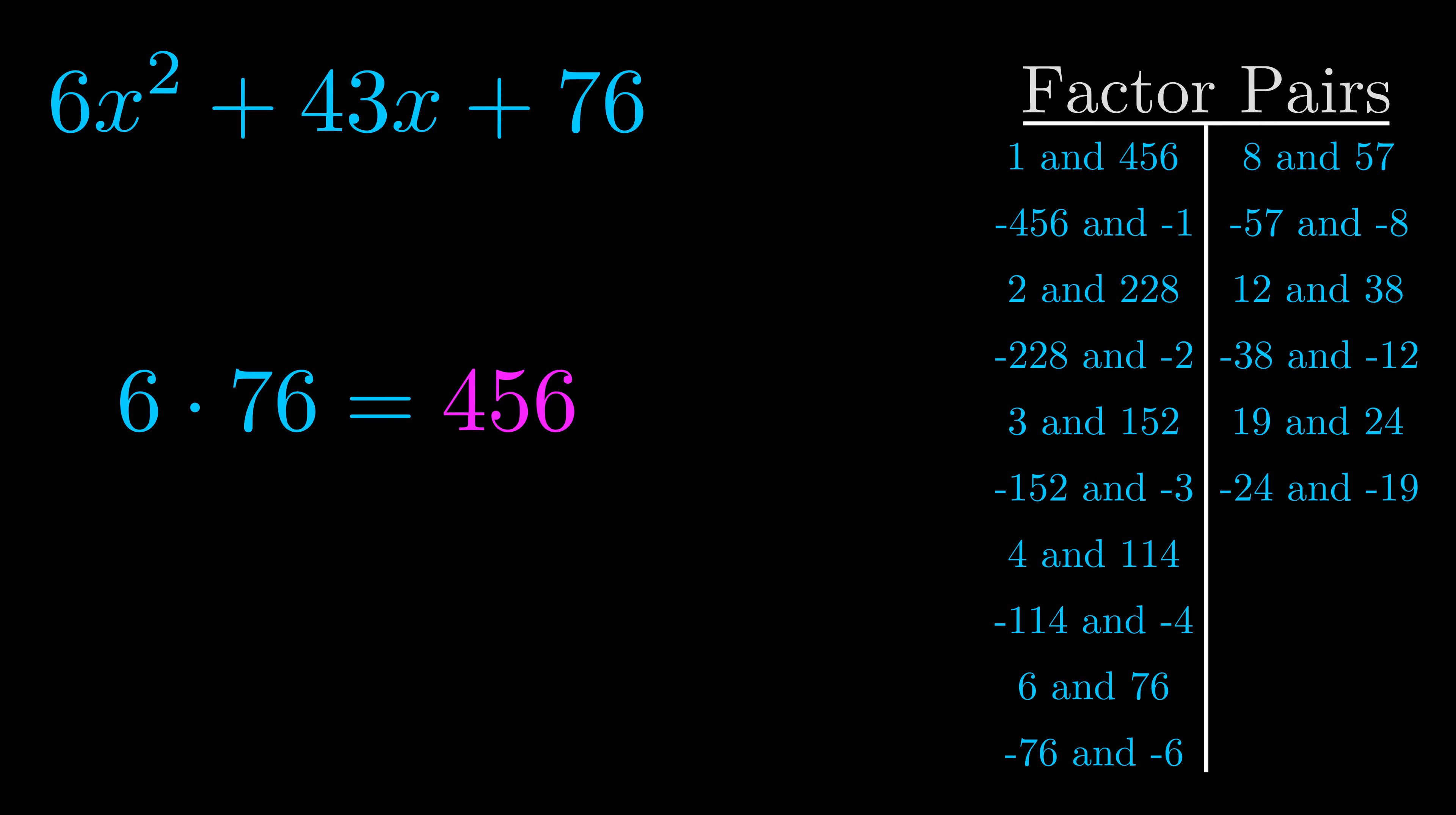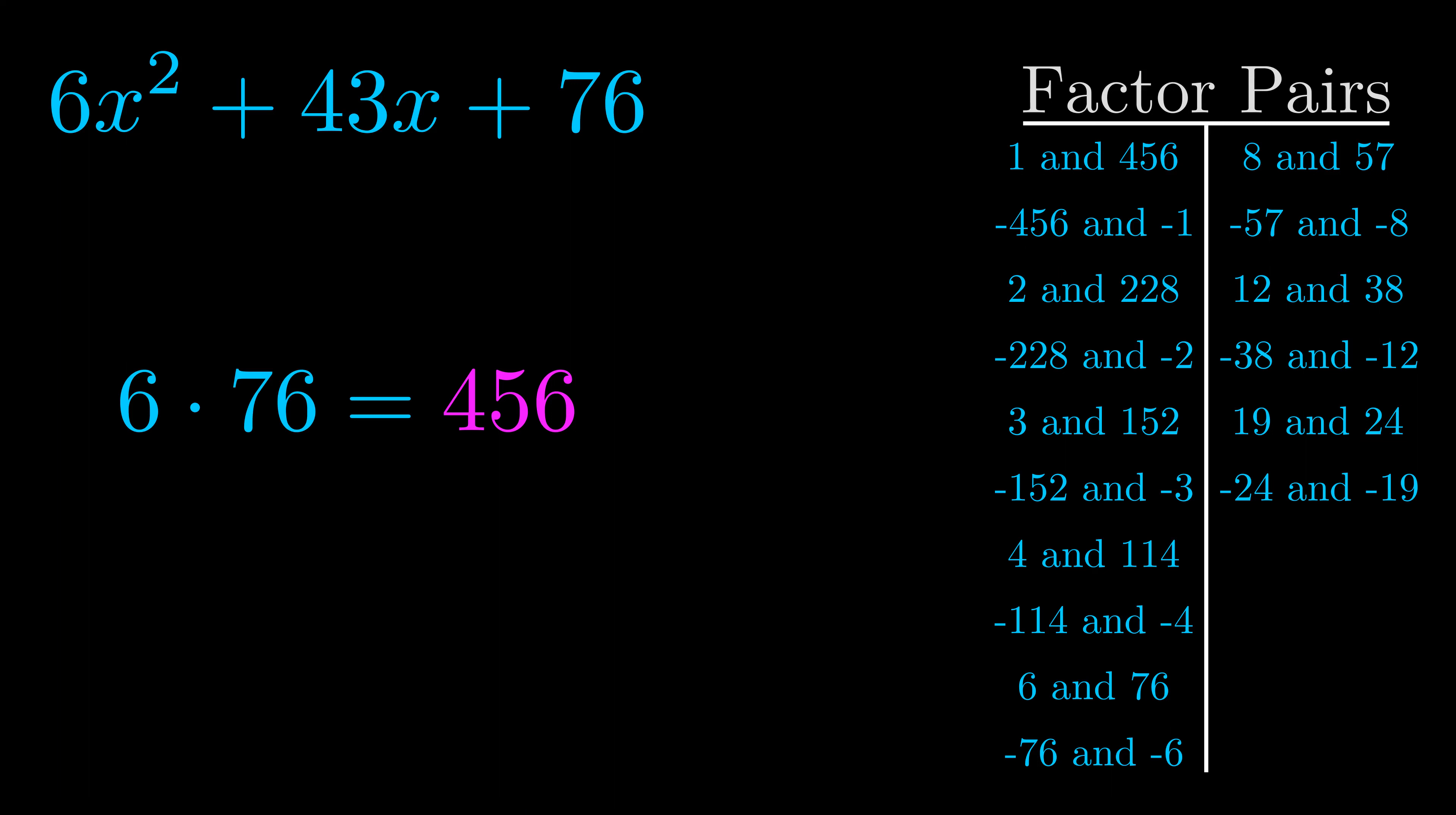Now once you have these factor pairs, the goal is to find which of these pairs adds to the b value. The b value is the coefficient on the x term. That's the middle term, the one that we haven't done anything with yet. And really this is the only factor pair that we need.